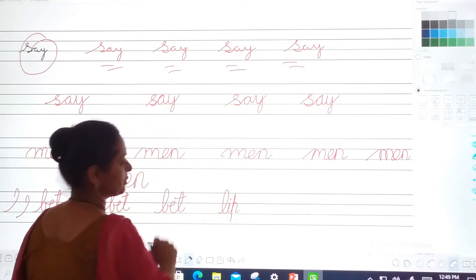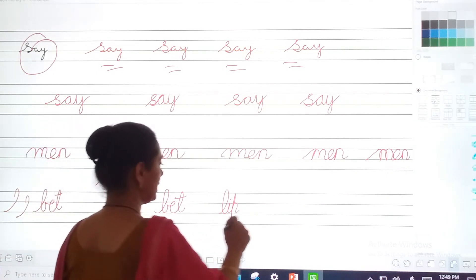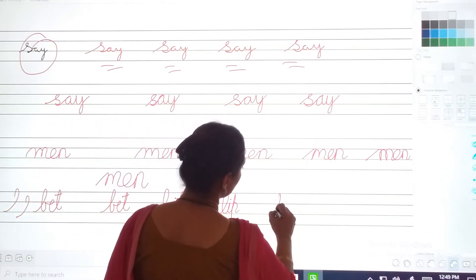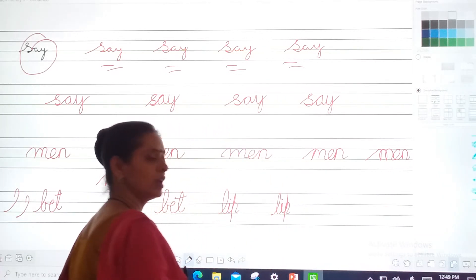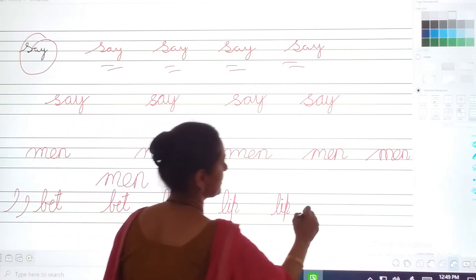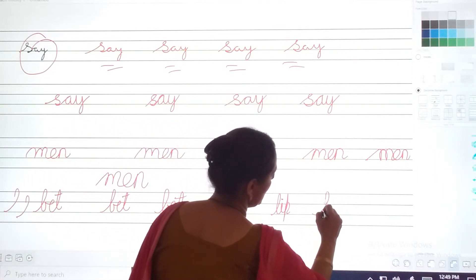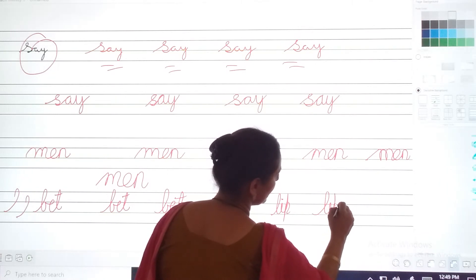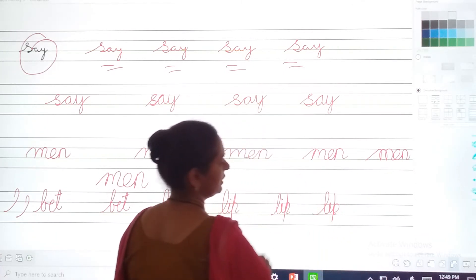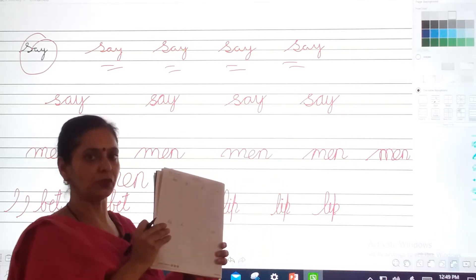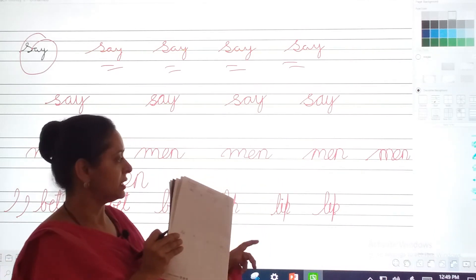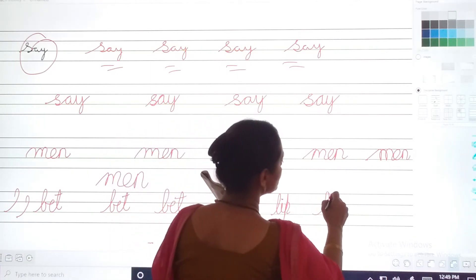Usko pura touch nahi karna hai. It is called lip. Or you can write in this way also. Okay? L, I, P, lip. Okay? In your book it's given like this. So you will be writing in this form. This is the correct formation.